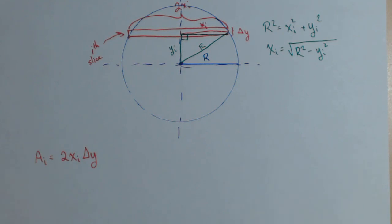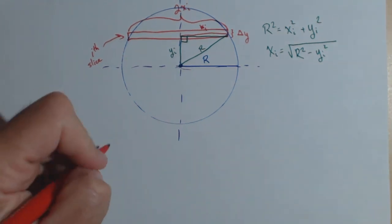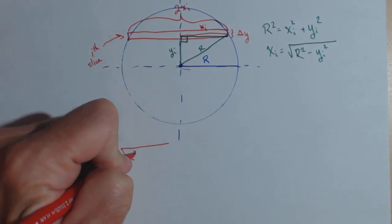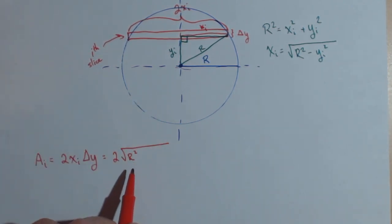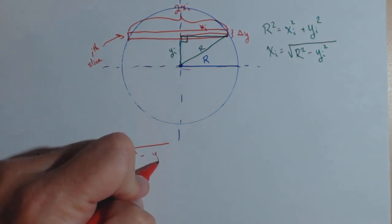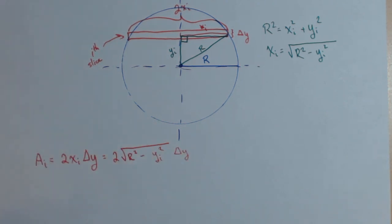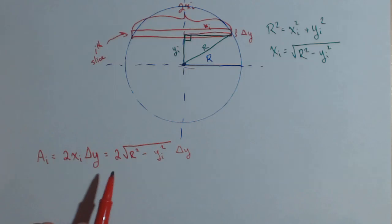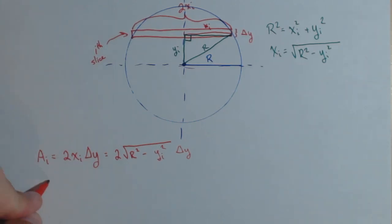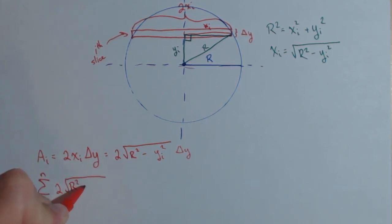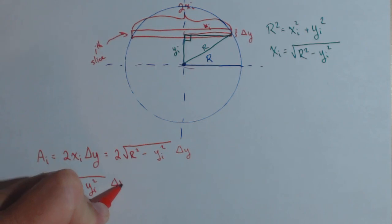That substitution goes into our area expression. So the area of the ith slice is 2 times the square root of r squared minus y sub i squared times delta y — and notice that capital R is a constant, not a variable. Our next step is to create a Riemann sum: the sum from i equals 0 to n of 2 times the square root of r squared minus y sub i squared times delta y.